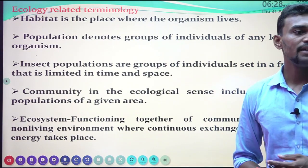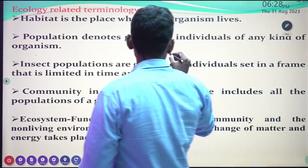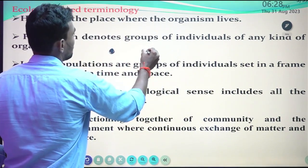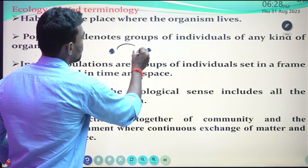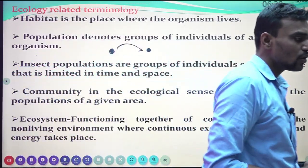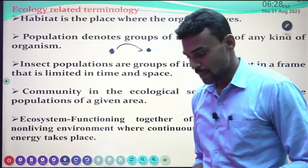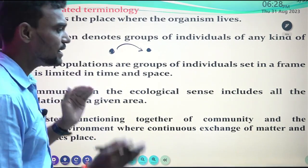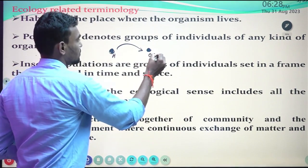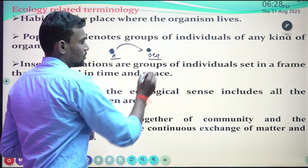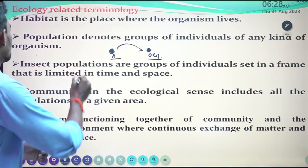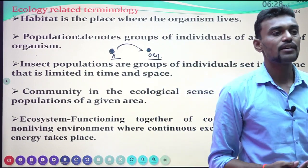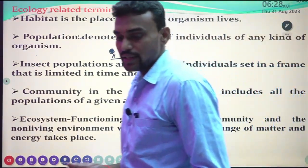Habitat is the place where an organism lives. Population is one of the broad things — all these ecological related terms have their definitions too. These are important to know for the upcoming subtopics. Population is the group of individuals of any kind of organism.